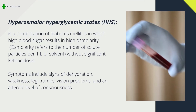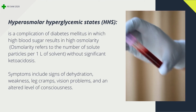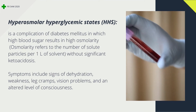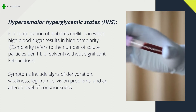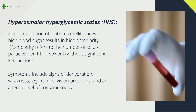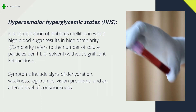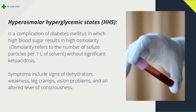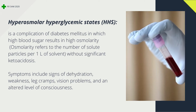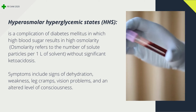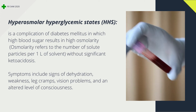Hyperosmolar hyperglycemic states (HHS) is a complication of diabetes mellitus in which high blood sugar results in high osmolarity. Osmolarity refers to the number of solute particles per one liter of solvent, without significant ketoacidosis. Symptoms include signs of dehydration, weakness, leg cramps, vision problems, and an altered level of consciousness.